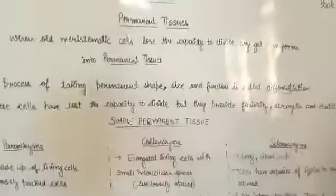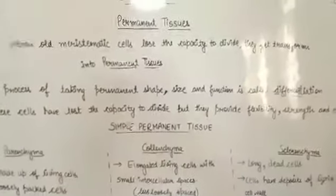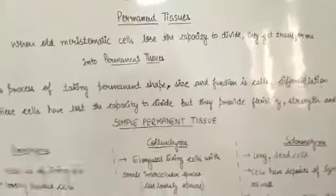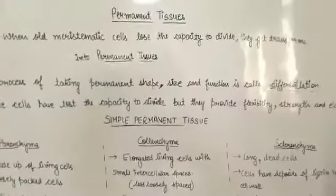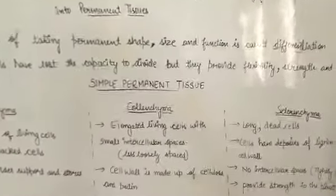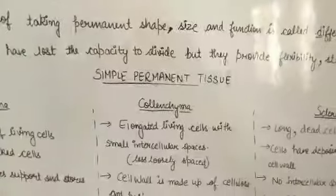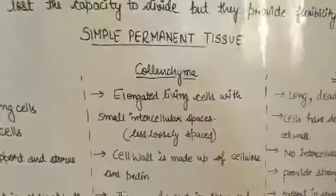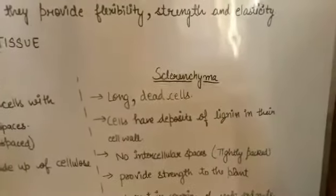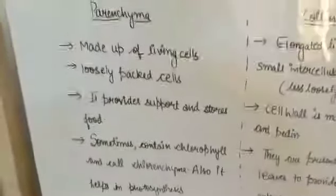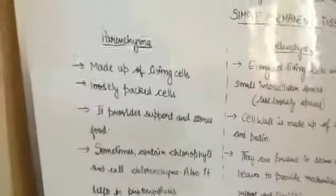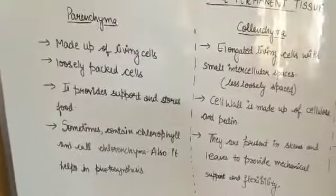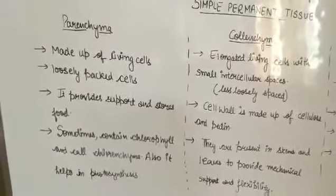Permanent tissues are also of two types: simple permanent tissue and complex permanent tissue. The first we have to study is simple permanent tissue. On the basis of different functions, simple permanent tissue is of three types: parenchyma, collenchyma, and sclerenchyma. Let's study about parenchyma — these are some important characteristics of the parenchyma simple permanent tissue.